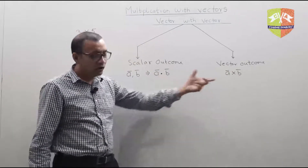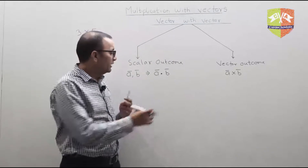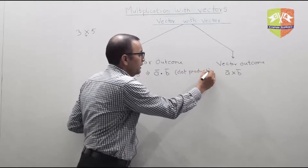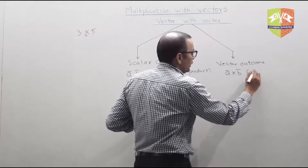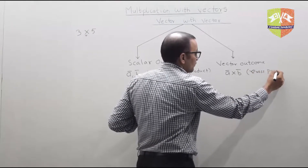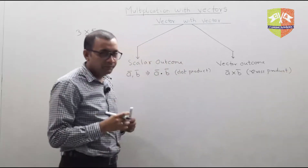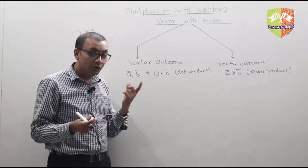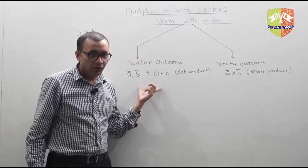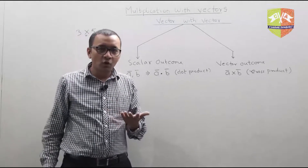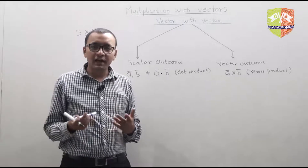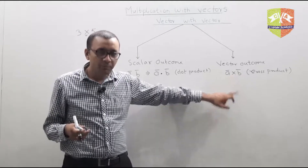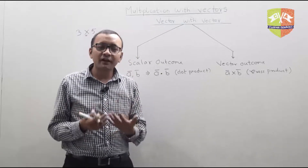Based on how you write it, there is a second name. This is also called dot product because there is a dot in between, and the other is also called cross product. Now, I need to define the magnitude of the dot product. Do I need to define the direction of the dot product? No, because the outcome is a scalar and a scalar has no direction. But in this case, I need to define not only the magnitude but also the direction because the outcome is a vector.